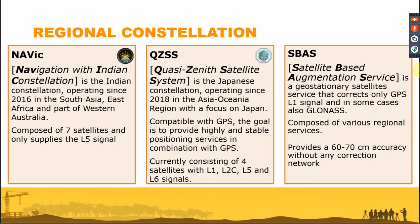We also have SBAS — Satellite-Based Augmentation Services — which are geostationary satellites that correct only GPS L1 signals, and in some cases GLONASS. Regional examples include WAAS in the US, SDCM in Russia, EGNOS in Europe, MSAS in Japan, GAGAN in India, and Beidou SBAS in China. EGNOS has been enabled since 2011 and is made up of three satellites, providing accuracy of around 50-70 centimeters without any additional correction subscription.